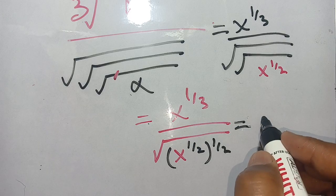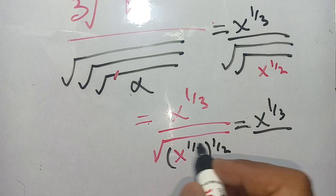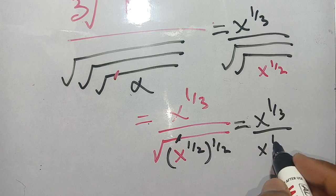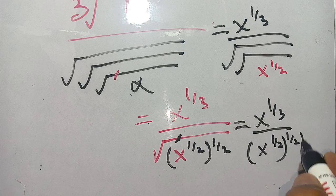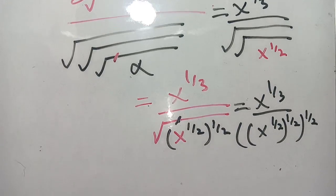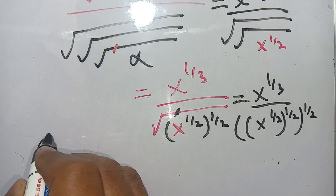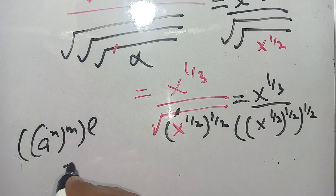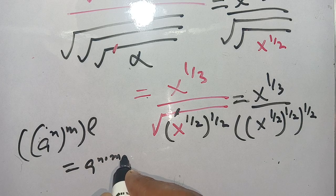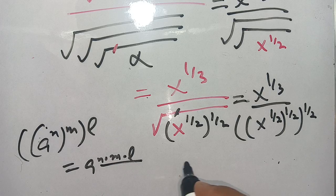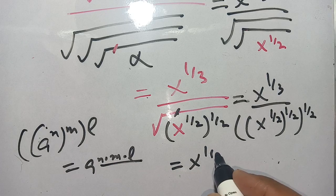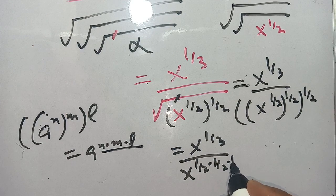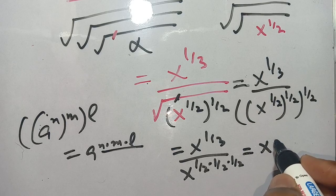For the third square root, we write the power of x as x power 1 divided by 2 times 1 divided by 2, bracket power 1 divided by 2. Using the rule that a^n raised to m raised to l equals a^(n×m×l), we write this as x power 1 divided by 3 divided by x power 1 divided by 2 times 1 divided by 2 times 1 divided by 2 times 1 divided by 2.